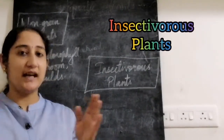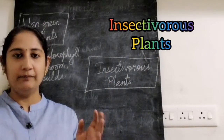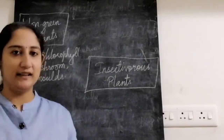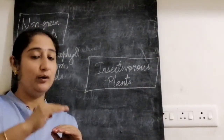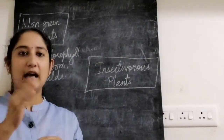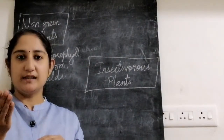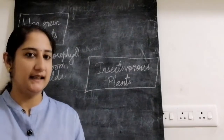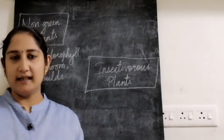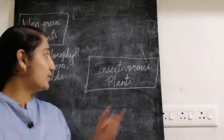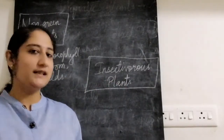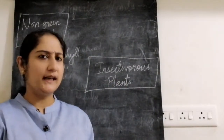In insectivorous plants, the leaves are modified to trap the insect. They have an attractive color, and seeing these colors, insects are attracted to the plant. When the insect goes and sits on the leaf, the leaf has some mechanism to trap the insect inside, where it gets trapped and dies.